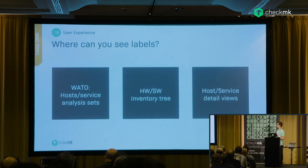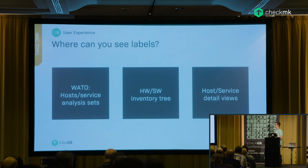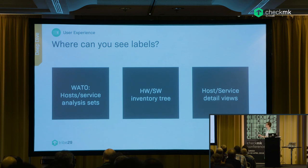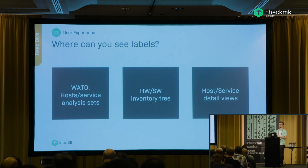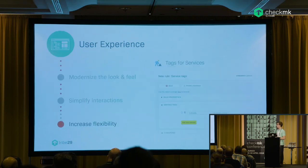Currently you can see labels in three places in the status GUI and the host/service detail pages — there is a section called labels. You can click on labels to get to similar systems; for example, clicking 'OS:Linux' on a Linux host shows all Linux hosts. Views can be dynamically filtered by combining labels to show exactly what you want to see. The inventory tree is more for analysis — which plugins come from which labels — so on the software host analysis page you can see which labels are present in WATO.